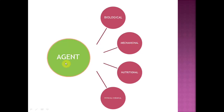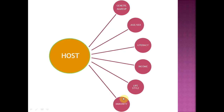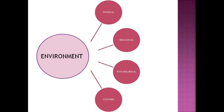Agent is something coming from outside — it can be biological, mechanical, nutritional (like deficiency), physical, or chemical. Host factors depend upon genetics, age, gender, literacy level, income, lifestyle, and immunity — everything has a contributing factor for disease. Environment depends upon the customs followed, psychological factors, biological factors, and physical factors.